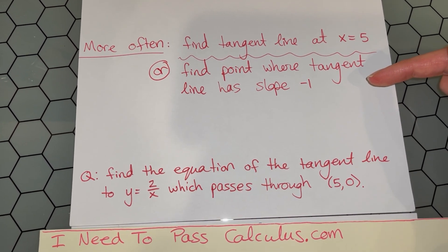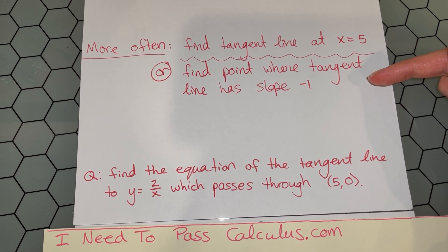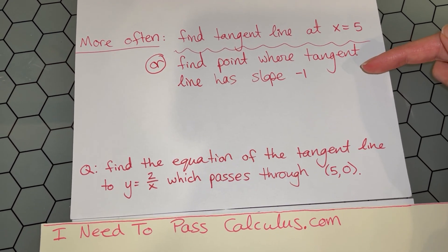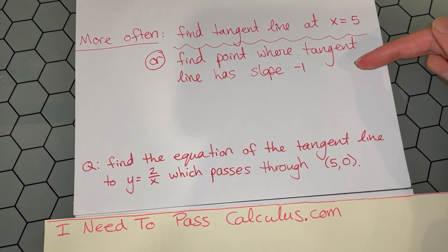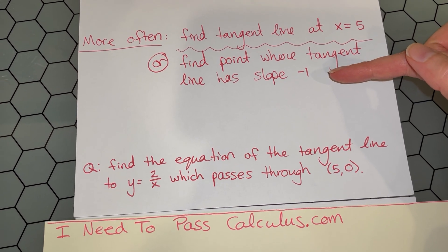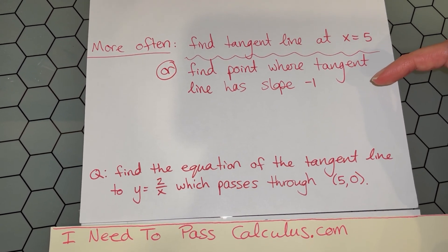Another common tangent line problem is when they tell you to find a point where the tangent line has a certain slope. They might say find horizontal tangent lines (slope = 0), or where the tangent line has the same slope as another equation, or they might tell you what slope you're aiming for. These are the two most common tangent line questions.